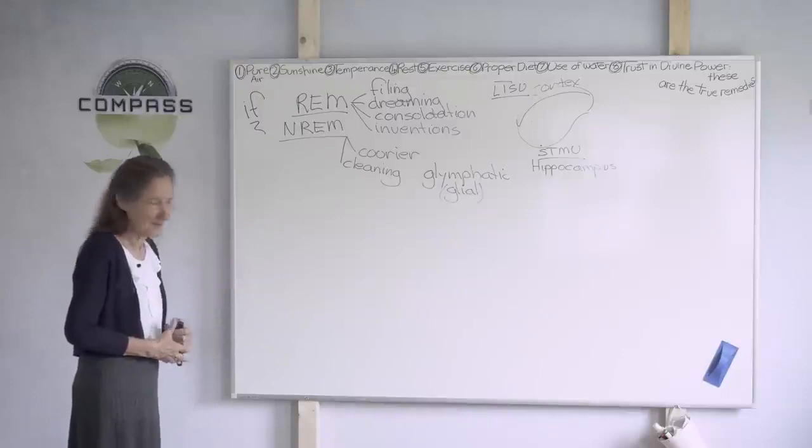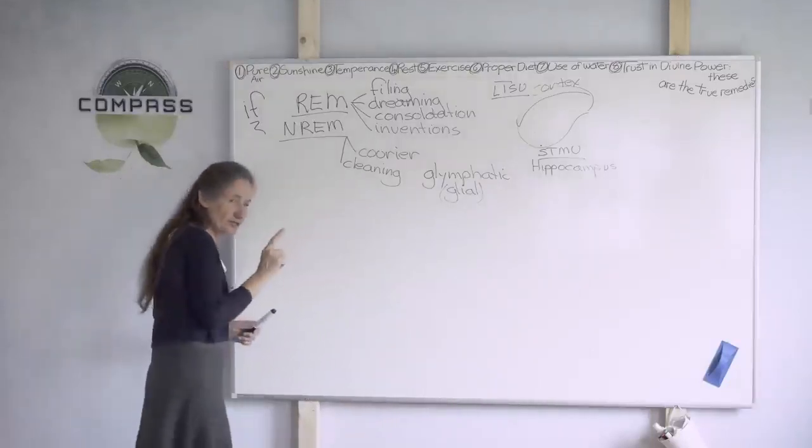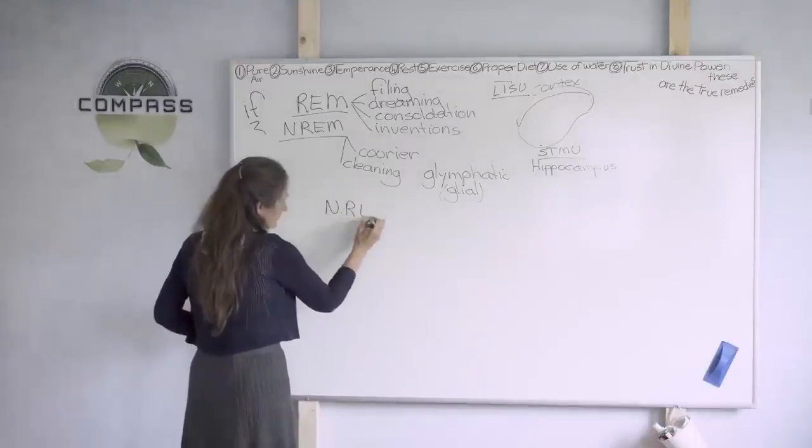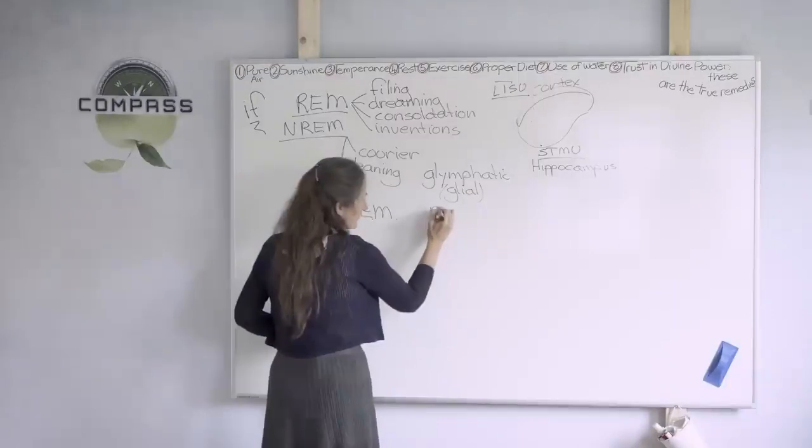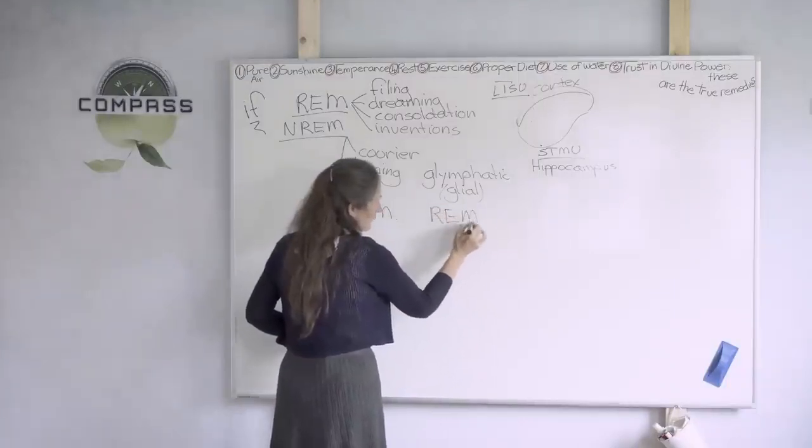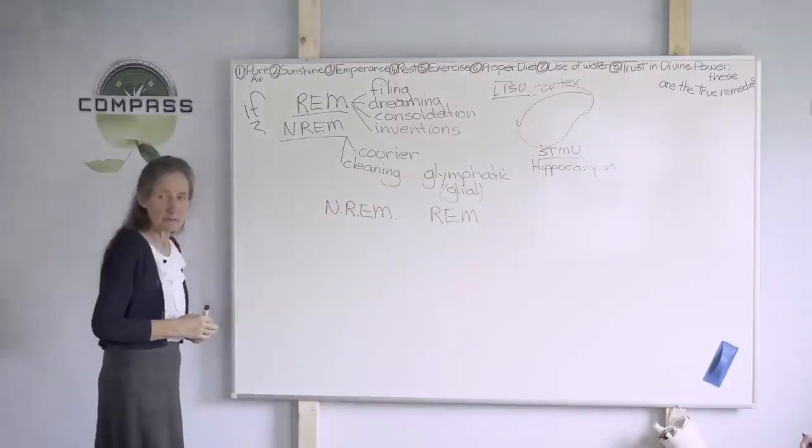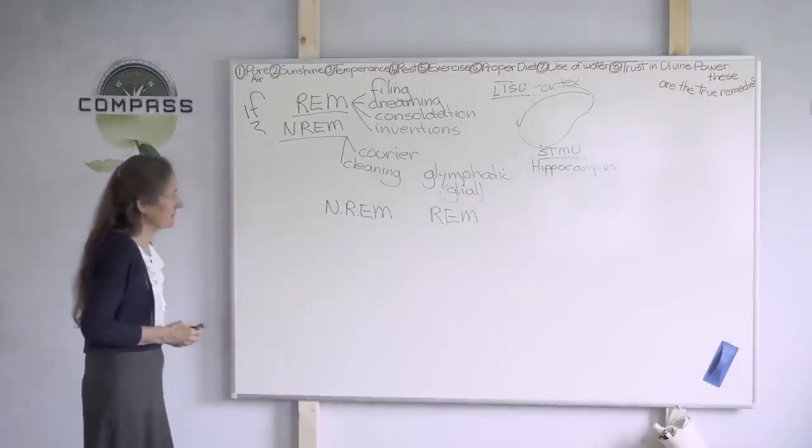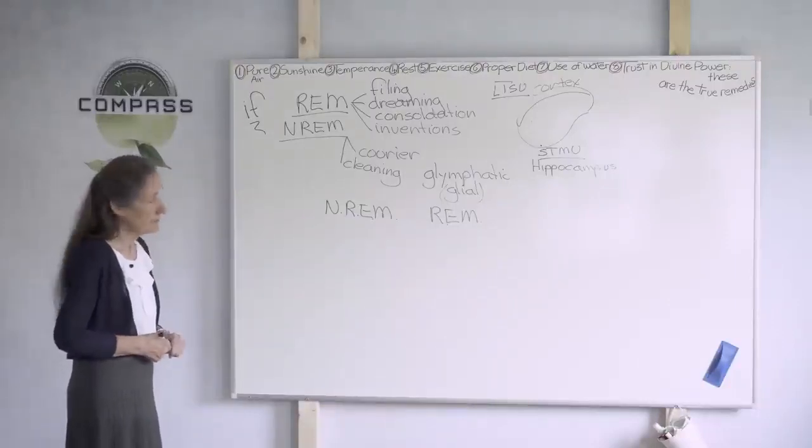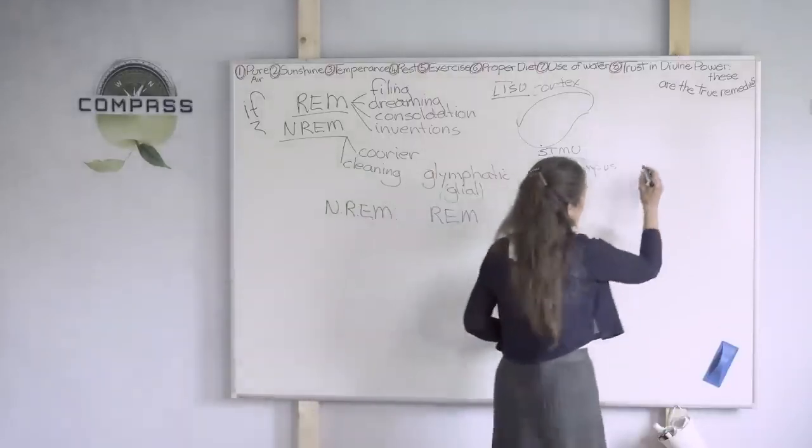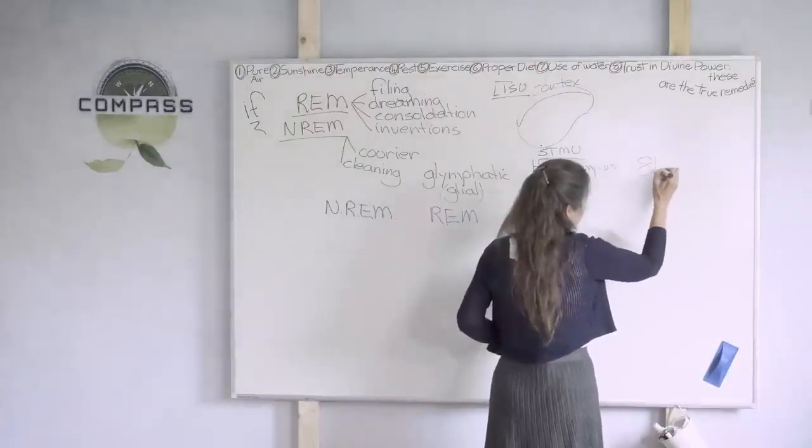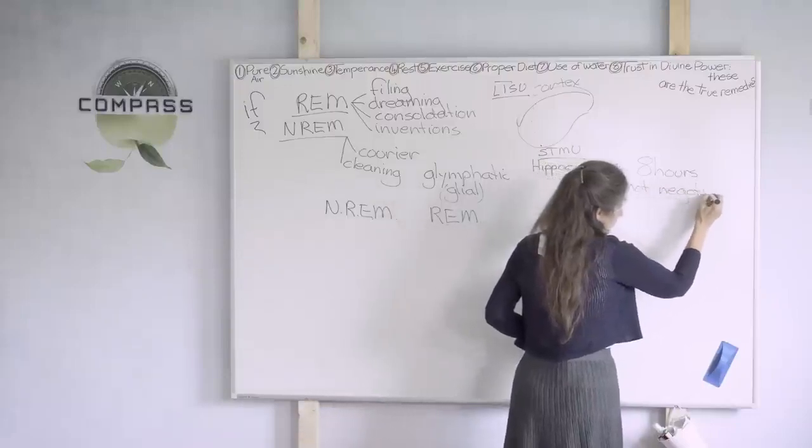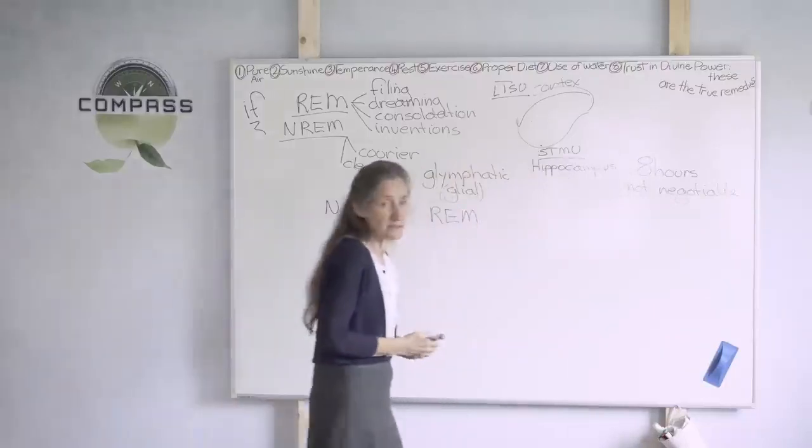Sedaj pa bi rada pokazala, kako to skupaj deluje. Pogledali si bomo čas, ko ni REM faza in kje deluje. In pogledali si bomo tudi čas REM faze. In to se dogaja v 90-minutnih ciklih. Poglejmo si od devetih do petih. Kaj je Matthew Walker pokazal z mnogimi raziskavami, kar piše v knjigi? Osem ur. Brezpogojno osem ur. Prej v naših preučevanjih ta teden sem omenila dr. Matthew Walkerja.